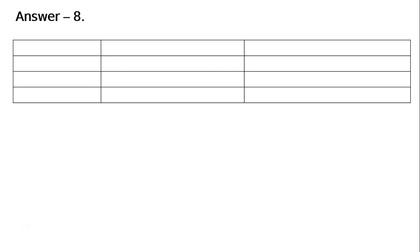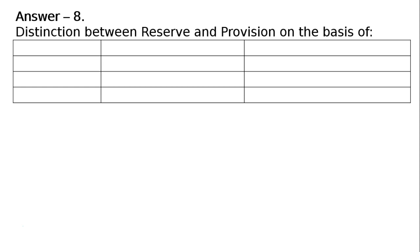Question 8: Distinguish between reserve and provision on the basis of appropriation or charge, financial position, and distribution. We have three columns: basis, reserve, and provision.